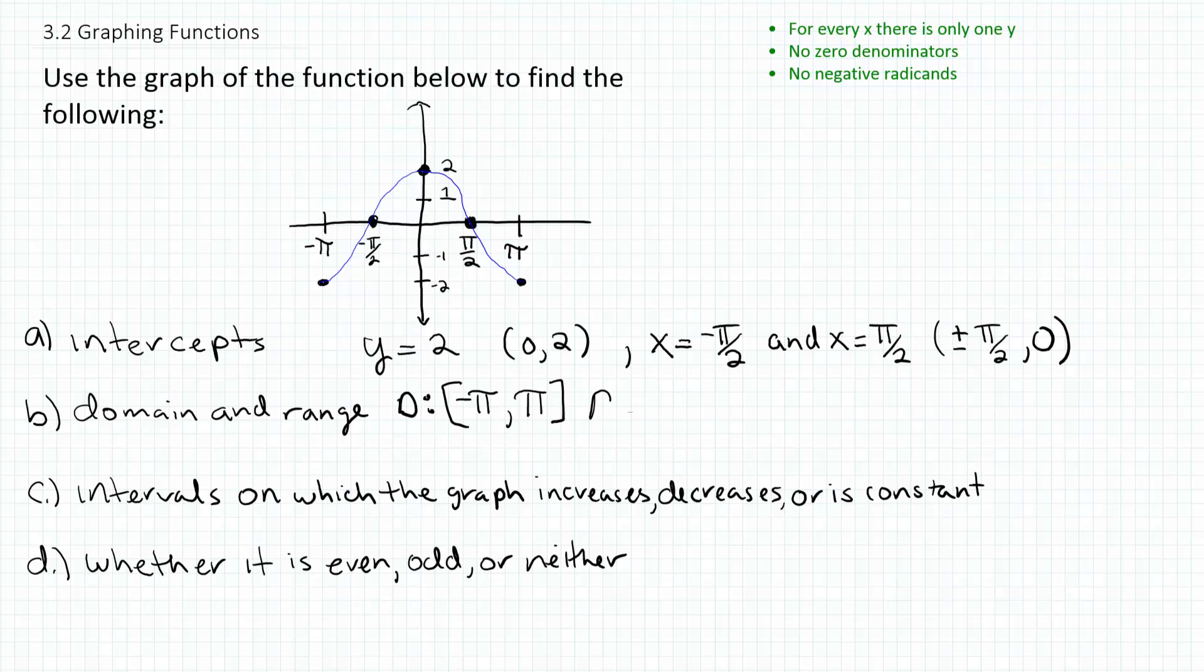Alright, so for the range, it's the same idea, but this time we'll be looking at the y-axis. So it looks like we have points along the y-axis from everything from 2 to negative 2, or vice versa from negative 2 to 2. So I think the range here includes negative 2 and goes up to positive 2 inclusive. And again, inclusive because we actually have points at those locations.